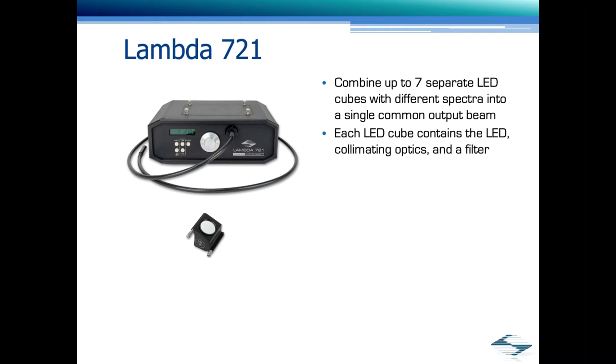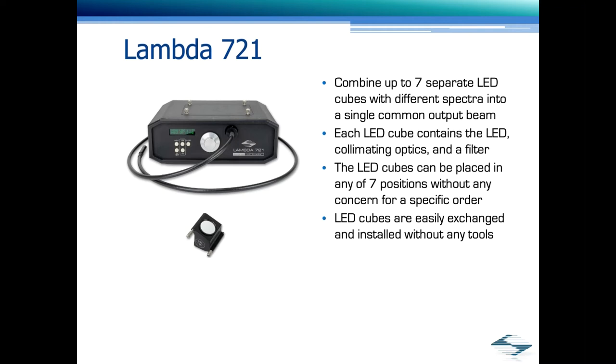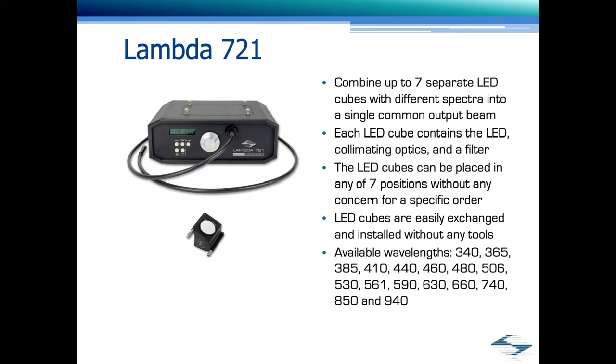Our NAN uses one of our newest products for the EPI light source, and that is the Lambda 721. The 721 can combine up to seven separate LED cubes with different spectra into a single common output path. Each LED cube contains the LED, optics, and a filter. The LED cubes can be placed in any of the seven positions without any concern for the order. LED cubes are easily exchanged without any tools. Available wavelengths from 340 to 940, and our product manager Chris Ballard is always on the hunt for new LEDs. Here's a short video of the Lambda 721 in action, and it just illustrates how fast the wavelength switching occurs.